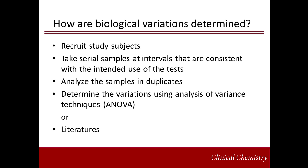For most common analytes, biological variation studies have been done. Therefore, by doing a literature search, we can find within-subject and between-subject biological variation values for most common analytes. However, the caveat of using published biological variation values is that they are method- and study-subject-dependent, and therefore may not be universally applicable.